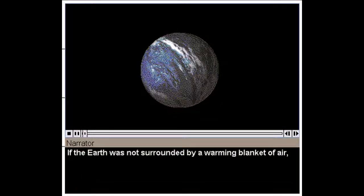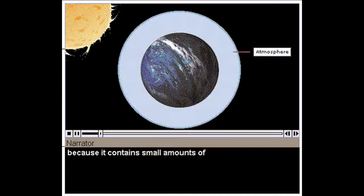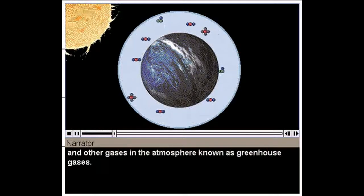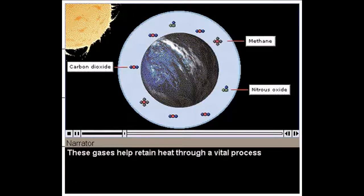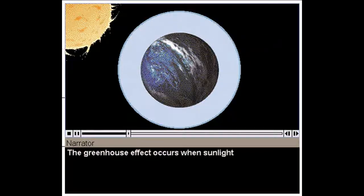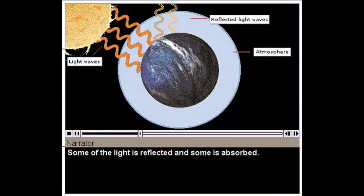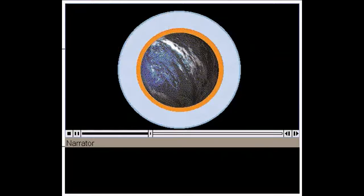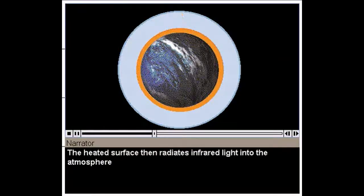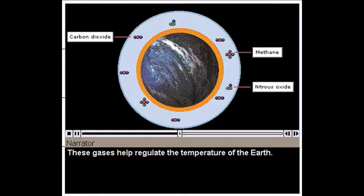If the Earth was not surrounded by a warming blanket of air, it would be much too cold for human habitation. Earth's atmosphere acts as this blanket because it contains small amounts of carbon dioxide, methane, nitrous oxide, and other gases in the atmosphere, known as greenhouse gases. These gases help retain heat through a vital process called the greenhouse effect. The greenhouse effect occurs when sunlight passes through the atmosphere and strikes the Earth. Some of the light is reflected and some is absorbed. The absorbed light warms the surface of the Earth. The heated surface then radiates infrared light into the atmosphere, where it is absorbed by greenhouse gases. These gases help regulate the temperature of the Earth.